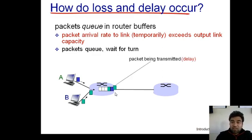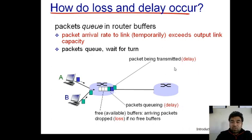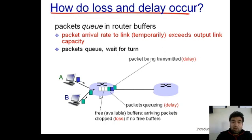As shown on the screen, there is a packet being transmitted, a packet experiencing queuing delay, and available buffer space. If the queue is completely filled with packets, any newly arriving packets will be dropped because there is no free space left in the buffer.